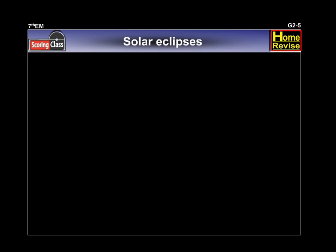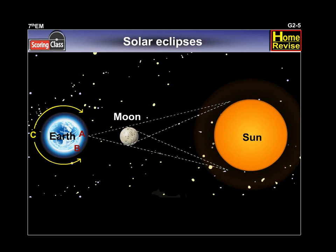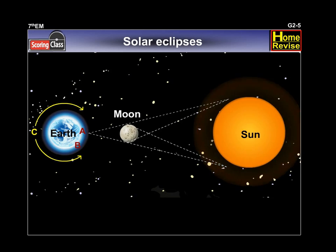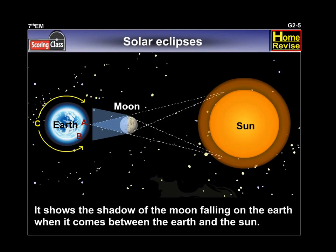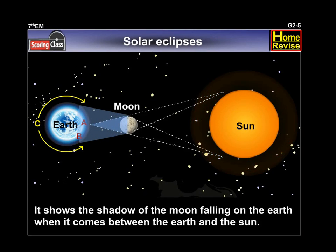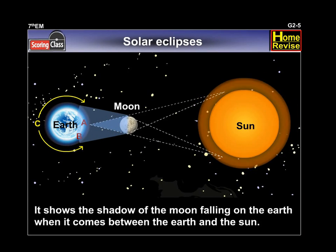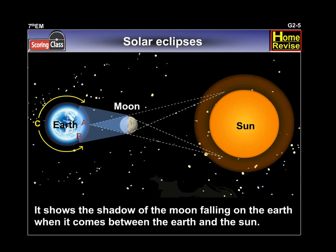Solar Eclipses. See the figure which shows a solar eclipse. It shows the shadow of the moon falling on the earth when it comes between the earth and the sun.